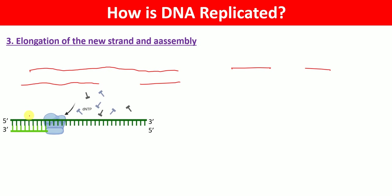The remaining five prime to three prime strand will be used as a template. Primase will make a primer, and the primer will be added to the template strand. Then the enzyme DNA polymerase adds nucleotides in the five prime to three prime direction. The addition happens in the opposite direction along this strand, producing fragments — these are Okazaki fragments.